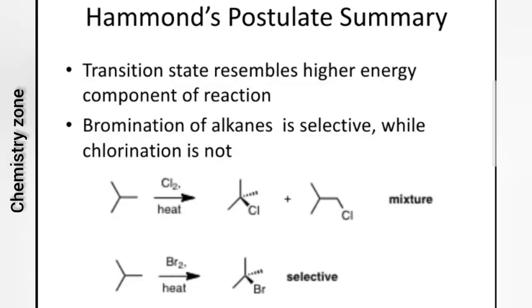Hammond's Postulate summary: Hammond's Postulate tells us the transition state resembles the higher energy component of the reaction. Bromination of alkane is selective while chlorination is not. If there is any component in a reaction, the transition state will resemble it based on relative energy. Alkane bromination is selective but chlorination is not selective. This completes the topic of Hammond's Postulate from Physical Organic Chemistry, MSc Third Semester. If anyone has any doubts, you can ask in the comment section. Thank you.